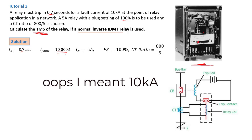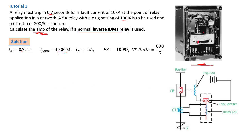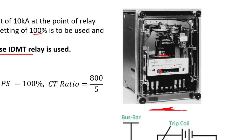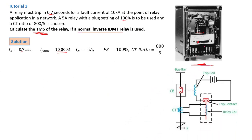If the fault current is reduced — say to 1,000 amps — the relay timing increases; it may be 5 seconds instead of 0.7 seconds. The higher the fault current, the faster the disc turns, as you can see on screen. The speed of the disc determines how fast it reaches the tripping point, and that depends on how much the coil is energized. If the fault is higher, the coil is more energized, the disc speeds up, and the relay trips faster — and vice versa.